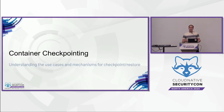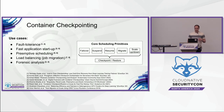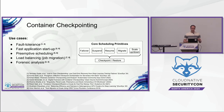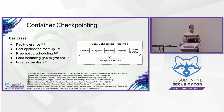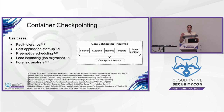Container checkpointing is a fundamental technology used for many different use cases. Some examples are fault tolerance, where a checkpoint is created periodically for long-running applications and in the case of failure the application can be restored from the last checkpoint. Or fast application startup, where a checkpoint can be created after the application has initialized some state, and then the application can be started in an already initialized state. Or preemptive scheduling, where low-priority tasks are preempted so that high-priority tasks can be scheduled in clusters, and load balancing, where applications can be migrated between different nodes in a cluster to improve resource utilization. Or forensic analysis, where a checkpoint is created and can be analyzed later on to inspect the runtime state.